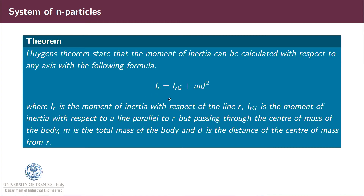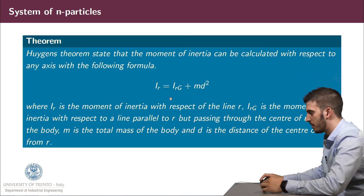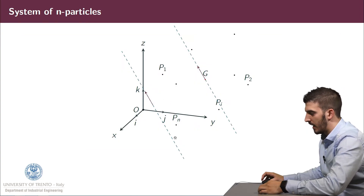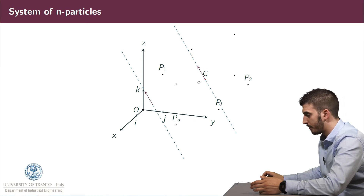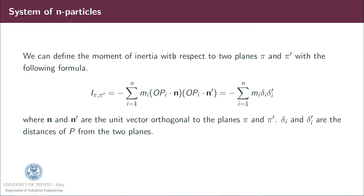Let's see a figure to explain in more detail. We have a line R and a line parallel to R passing through G. The distance d is the distance between those two lines. We can also define the moment of inertia with respect to two planes, π and π prime, with the following formula: the moment of inertia Iππ' equals minus the sum from i equal to 1 to N of mi times (OPi dot N) times (OPi dot N prime), where N and N prime are the orthogonal vectors to the planes π and π prime. This is also equal to minus the sum of mi·δi·δ'i, where δi and δ'i are the distances of Pi from the planes.